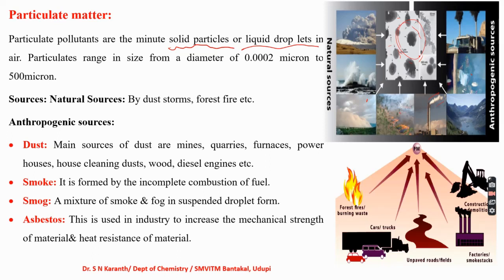Smog is the combination of smoke and fog in suspended droplet form. This is a major issue observed in North India because wheat crops, after harvesting, are burnt, producing large quantities of smoke during the cold season. These particles combine with fog, resulting in droplets that contain a high percentage of smoke particles. Another particulate matter is asbestos, used in industry to increase the mechanical strength and heat resistance of materials and for roofing — it has very small minor-sized dust particles. The major sources of particulate matter are dust, smoke, smog, and asbestos.